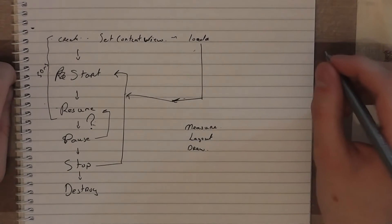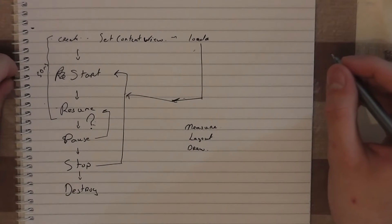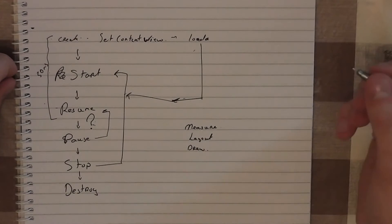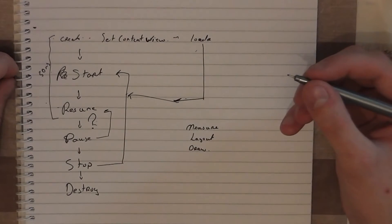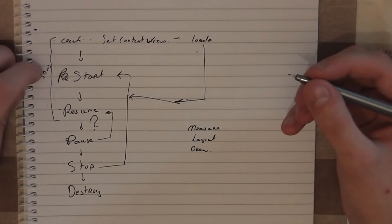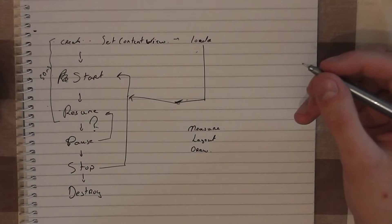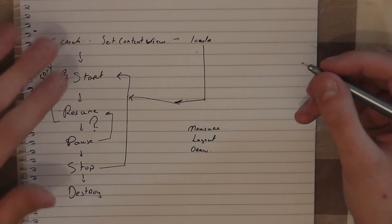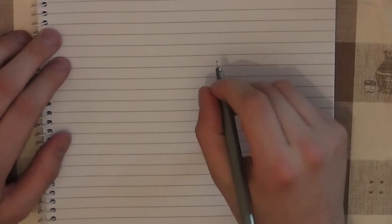Alright guys, welcome to your second Android Views tutorial. Last video, we talked about how views tie into the life cycle and how to make them appear faster by removing extraneous or lengthy calls from create, start, and resume. So this video, we're going to talk about how views actually render and how they actually manage themselves on screen.